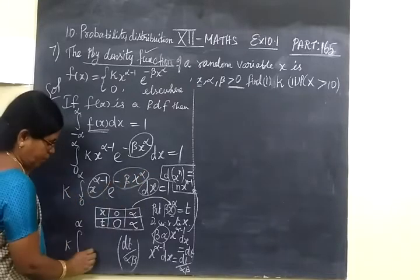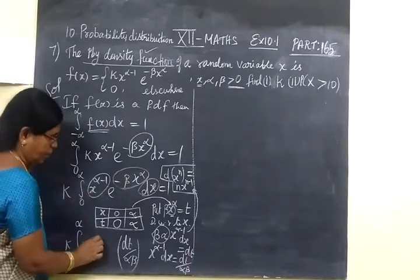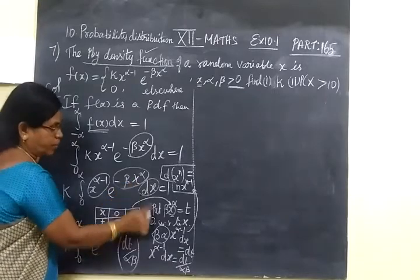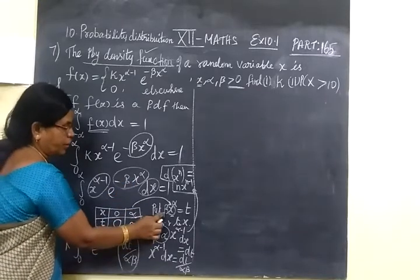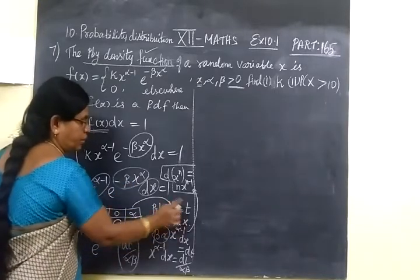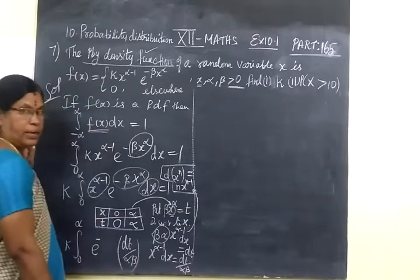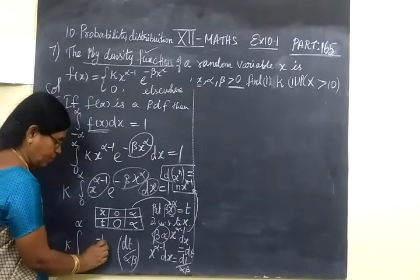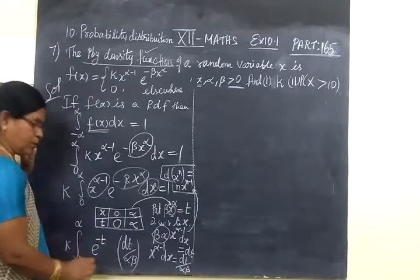For E power minus β·x^α, since we have taken β·x^α equal to T, this becomes E power minus T.